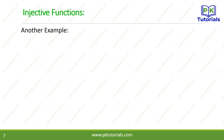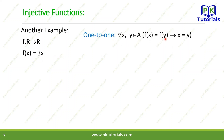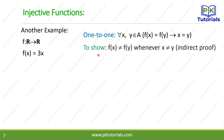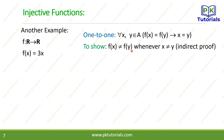Another example: f: ℝ → ℝ defined by f(x) = 3x۔ اس بار square کی جگہ multiplication ہے۔ To show it is one-to-one, we use indirect proof: show that f(x) ≠ f(y) whenever x ≠ y۔